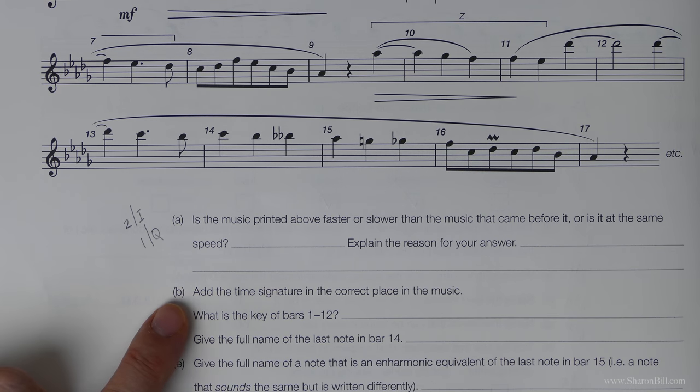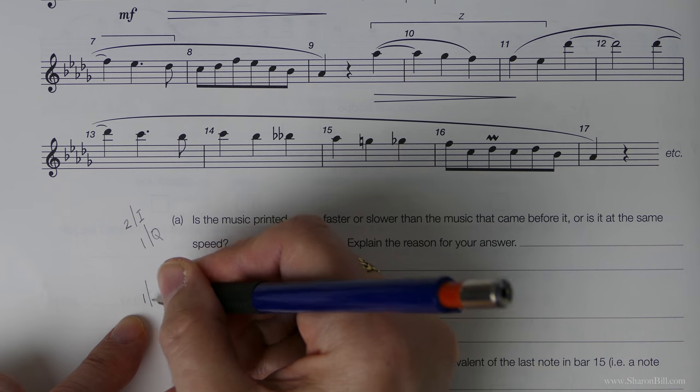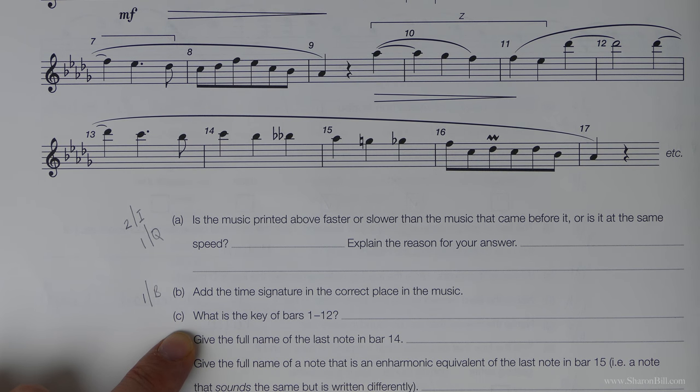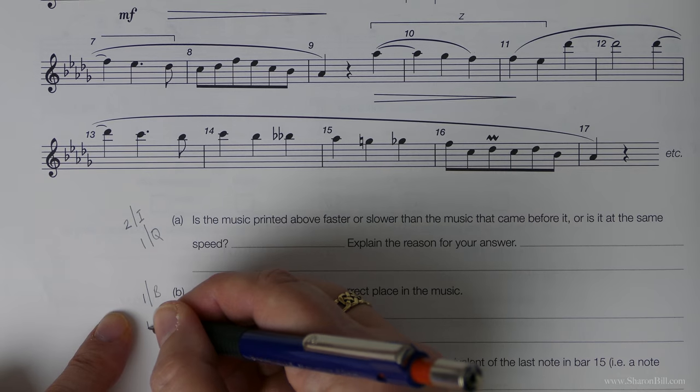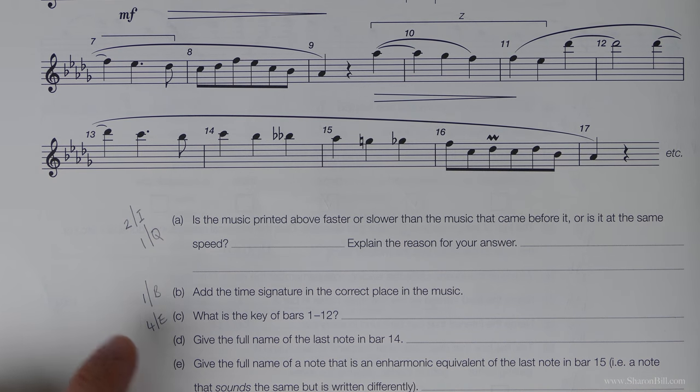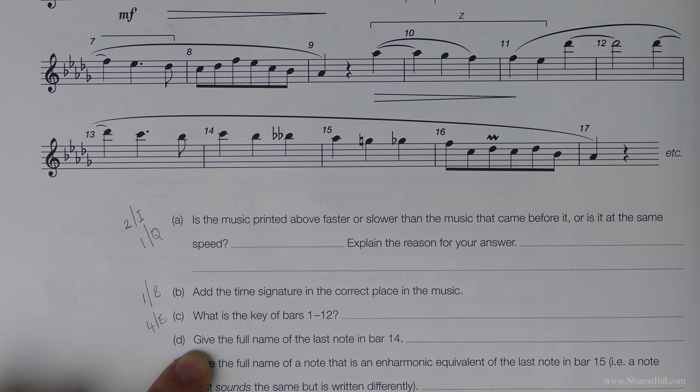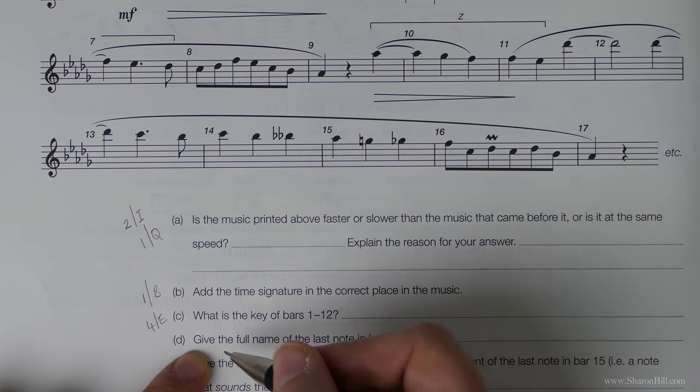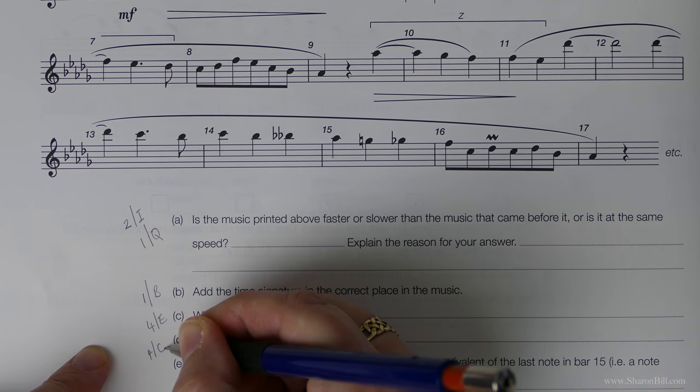Let's move on. So the time signature now. So we first find out about time signatures in grade one, section B. What is the key? So really the key signature and so on that we're looking at we first discuss in grade four, section E. Give the full name of the last note in bar 14. And so that refers to a topic that we've covered in this grade. So that's grade four, section C.